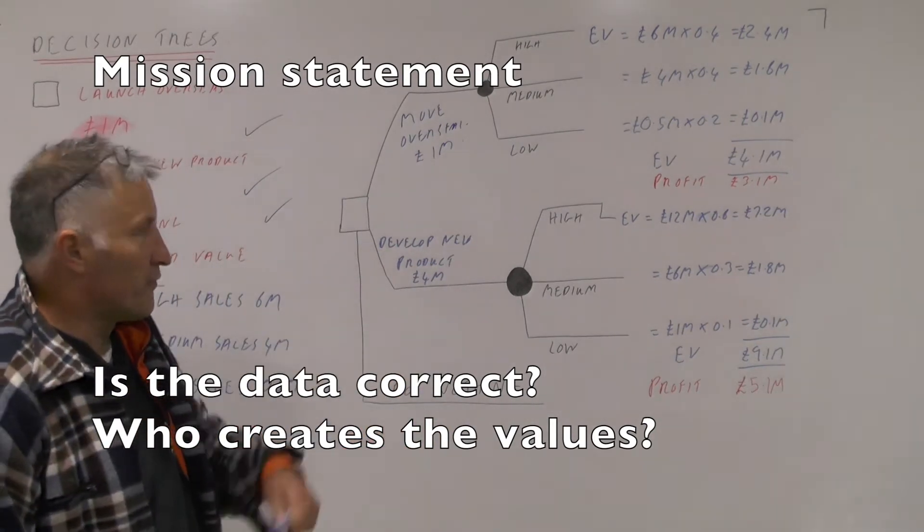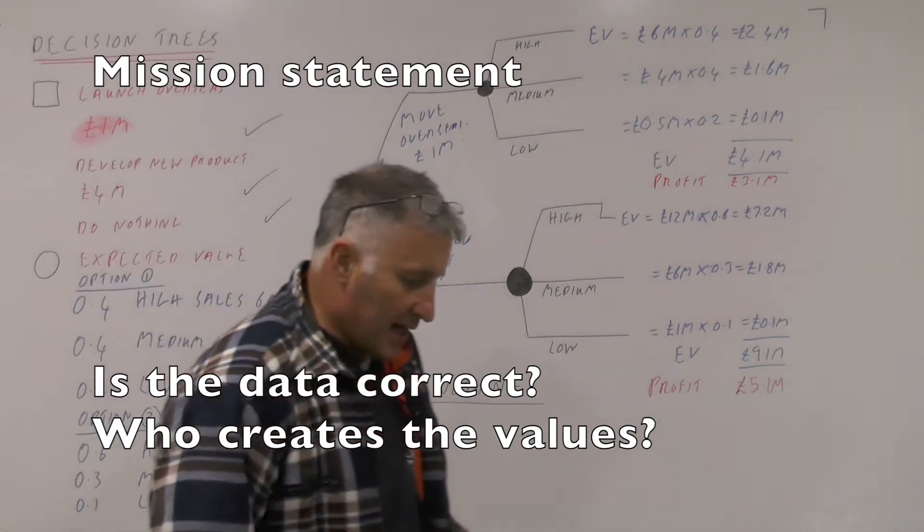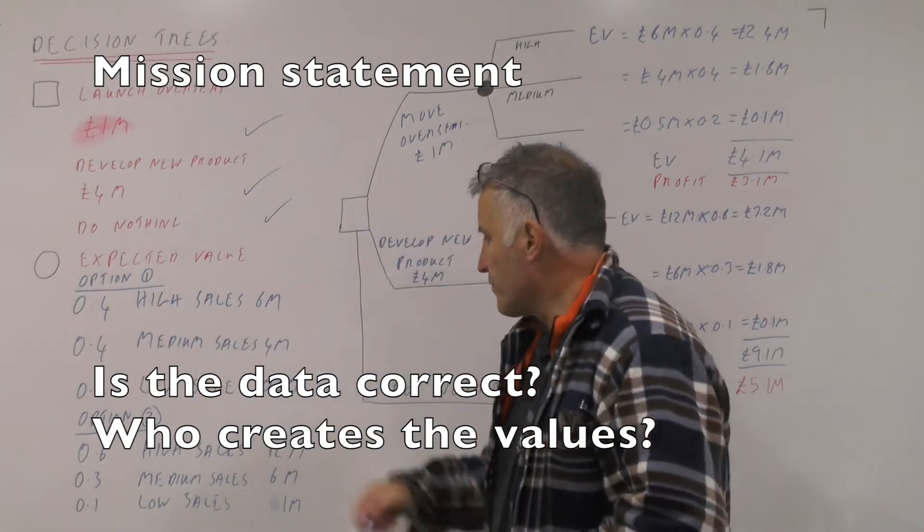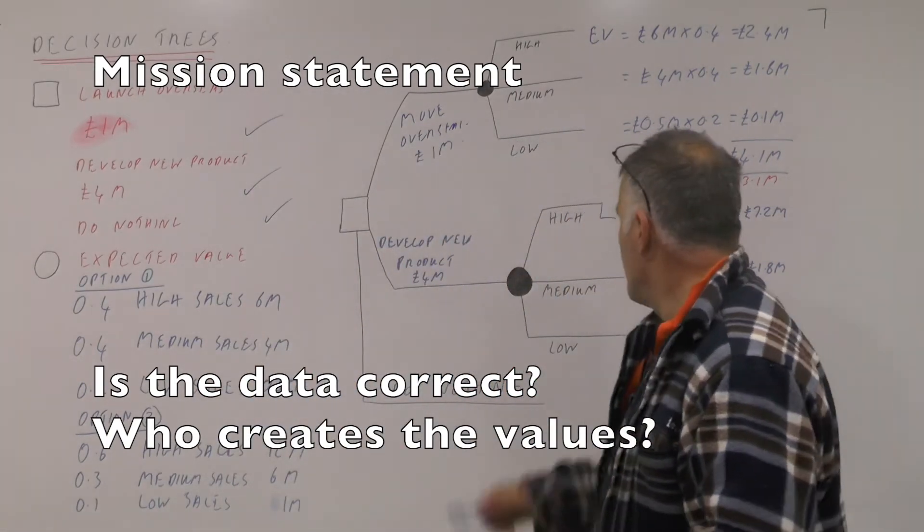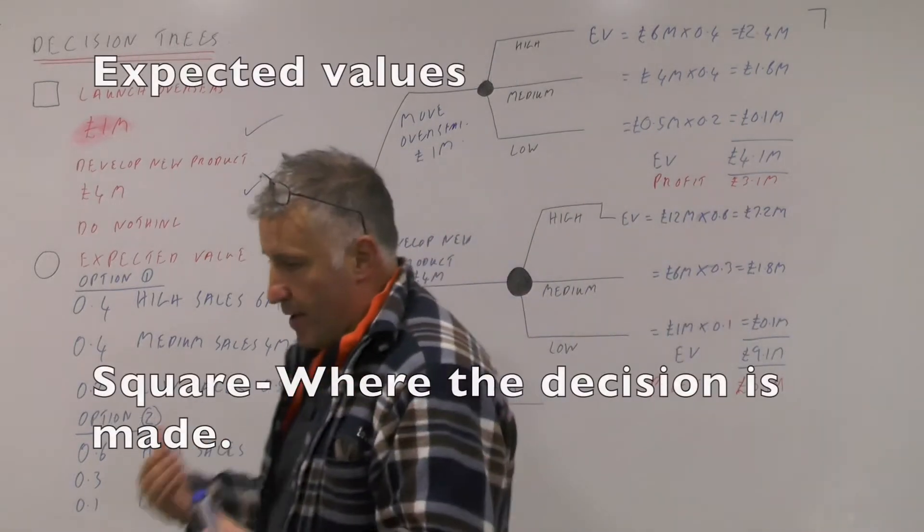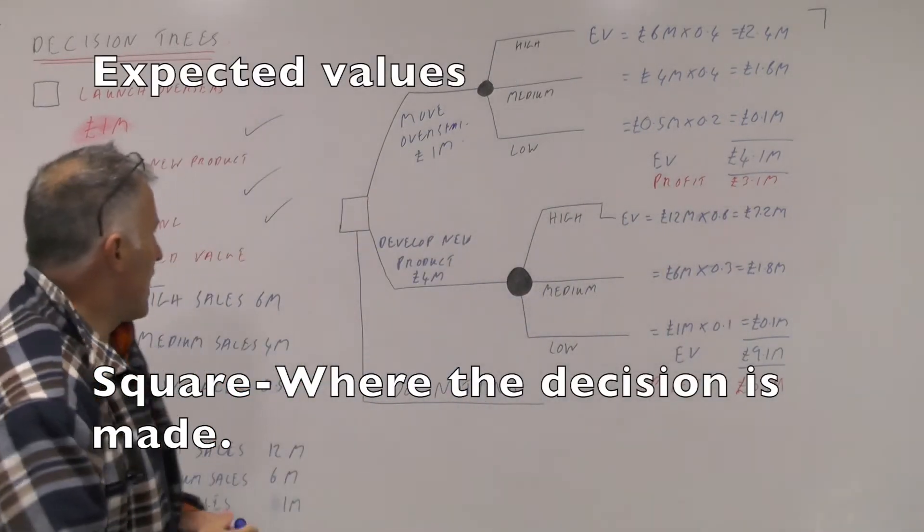The other one is where you decide to develop a new product. Here there's a 0.6 chance that you could in fact make £12 million.